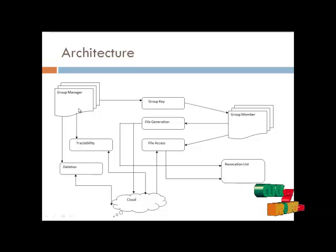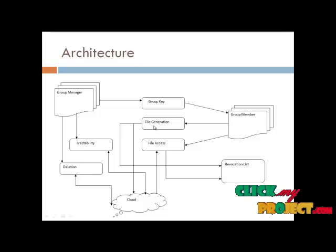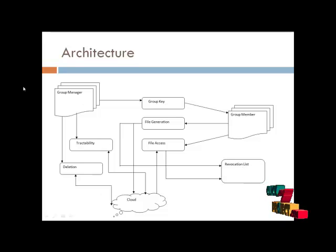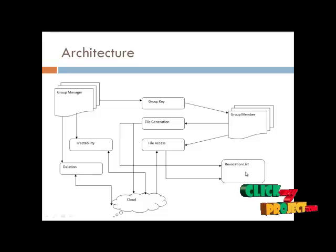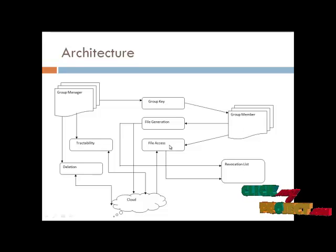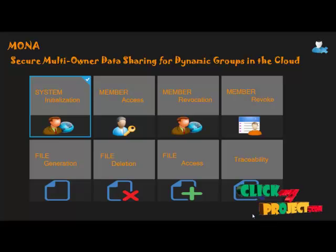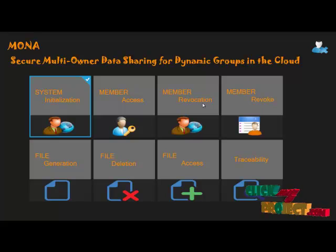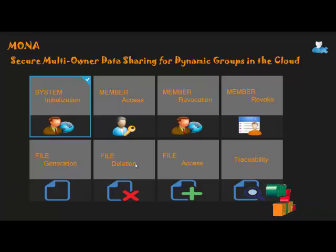The entire part is handled by the group manager, who operates at the admin level. The group member part is only for accessing and generating files. The revocation list is active on both sides dynamically. New users can easily join the group member pool. New users receive file generation and file access rights from the group manager.